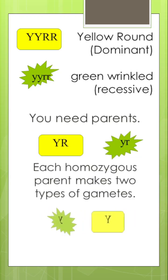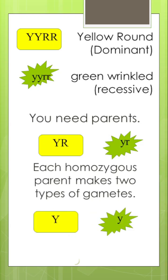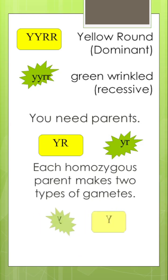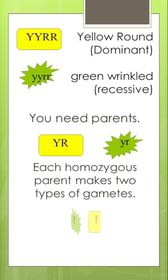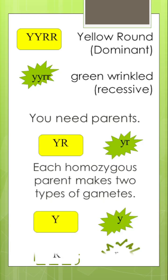In this example, you can have either a capital Y or a lowercase y for the color of the pea, where capital Y is yellow and lowercase y is green. And you can get a capital R or a lowercase r for the shape of the seed, where capital R is round and lowercase r is wrinkled.